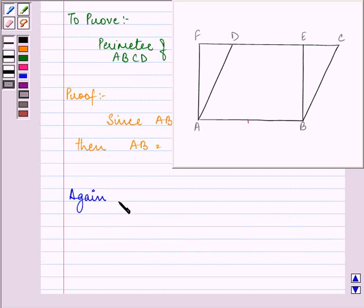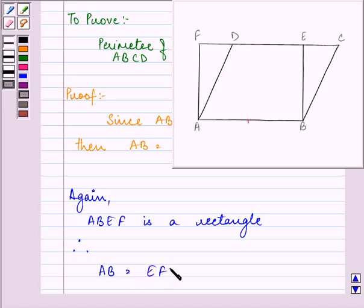Again, ABEF is a rectangle. Therefore, we can say that AB is equal to EF, because opposite sides of a rectangle are equal to each other. Let this be the second equation.